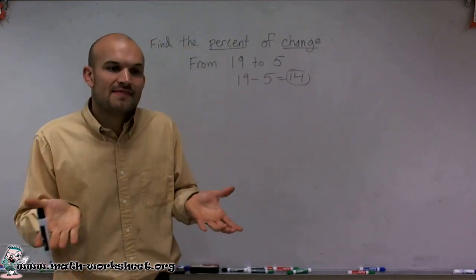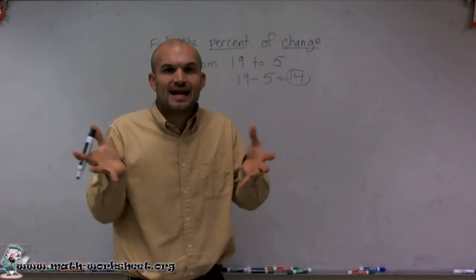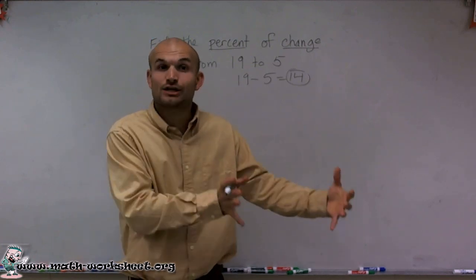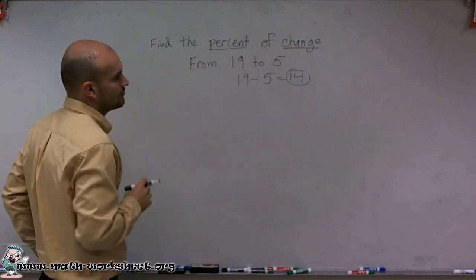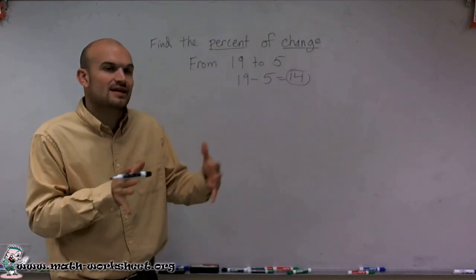And so if we have 19 and then we lost or went down to 5, we changed in the negative direction. That means we decreased down to 5. So we decreased by 14. So what was that percent of decrease?